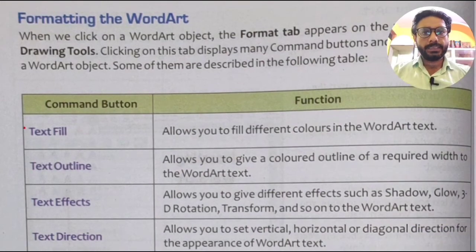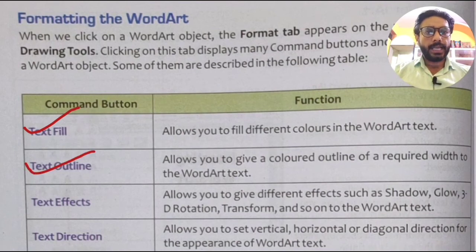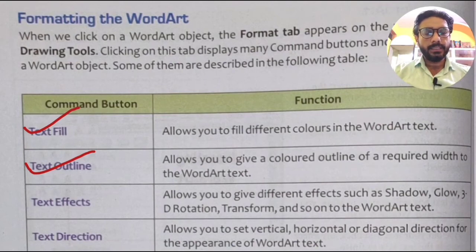The first option, Text Fill, allows you to fill different colors in a Word Art text. Text Outline allows you to give a colored outline of a required width to the Word Art text. We will select the Text Outline option to set the outline color and width.